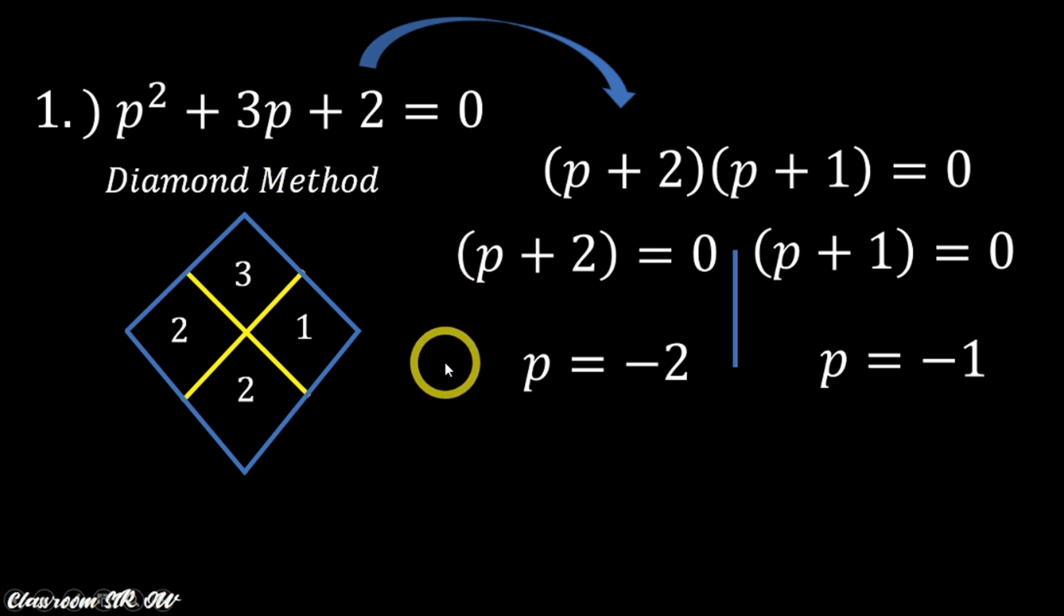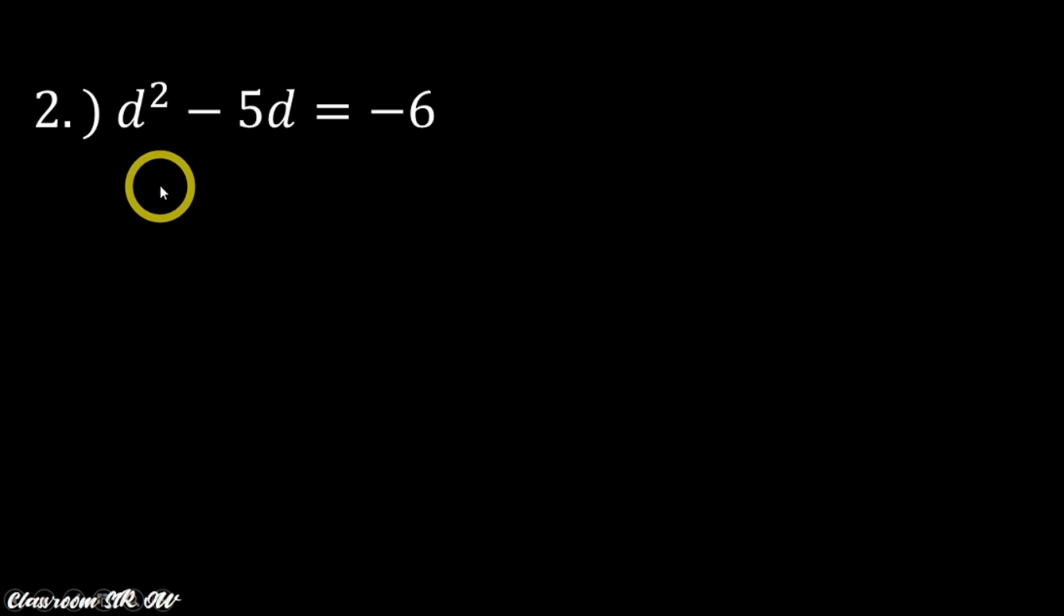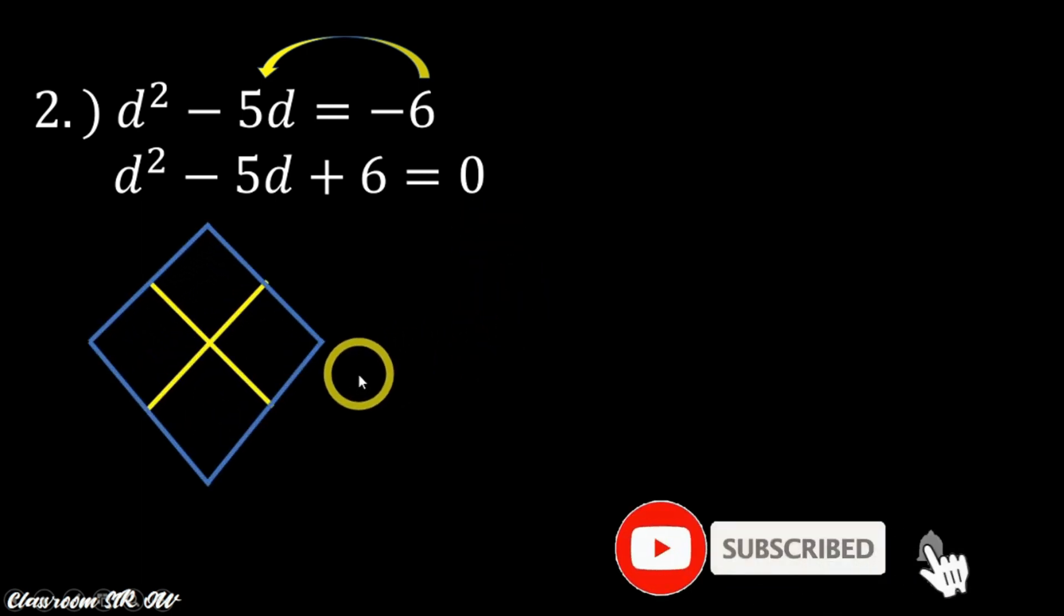So let us have another example: d² - 5d = -6. Now since the given equation is not in the standard form, so we will rewrite this into the form itself. So what we are going to do is we transpose that, which gives us now d² - 5d + 6 = 0.